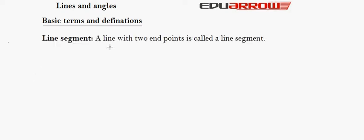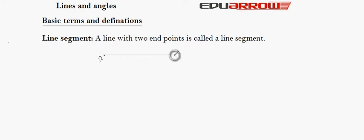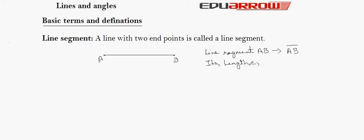Basic terms and definitions. Line segment: A line with two endpoints is called a line segment. Let's take a line with two endpoints, say A and B. It is called a line segment because it has two endpoints, as denoted by AB bar. Its line is denoted by just AB.